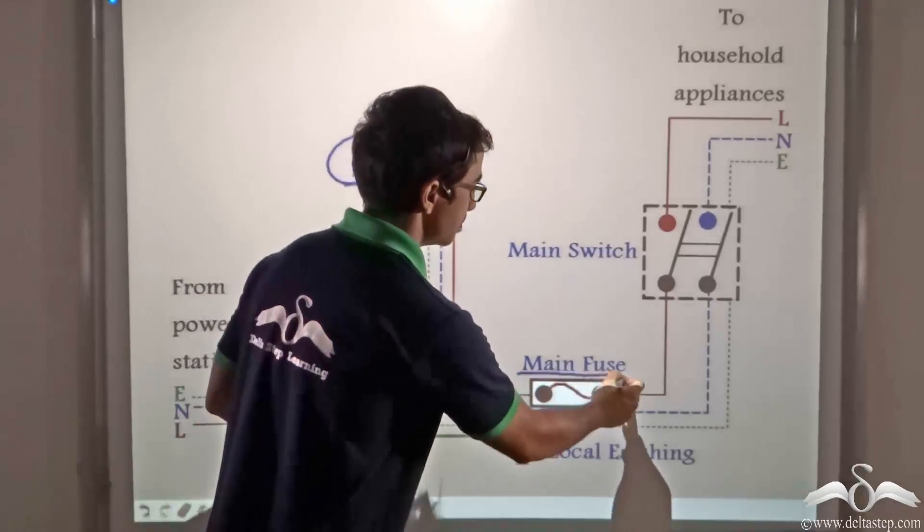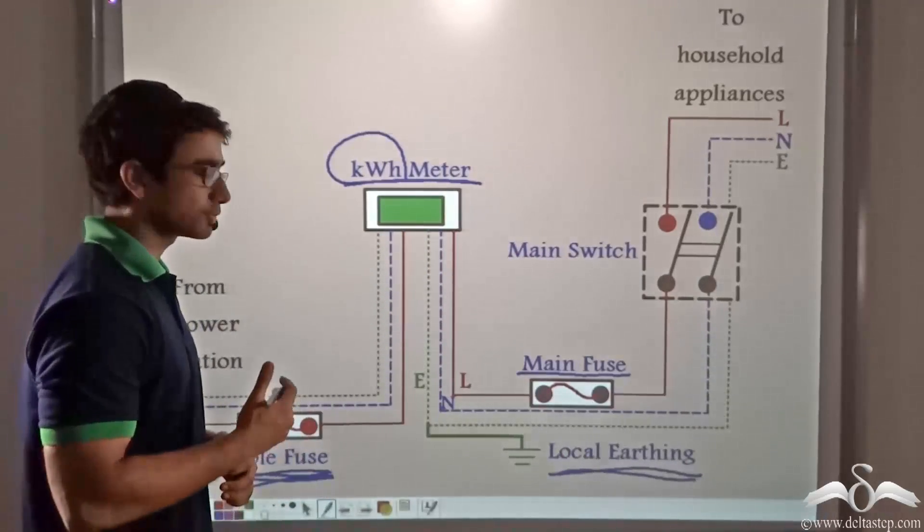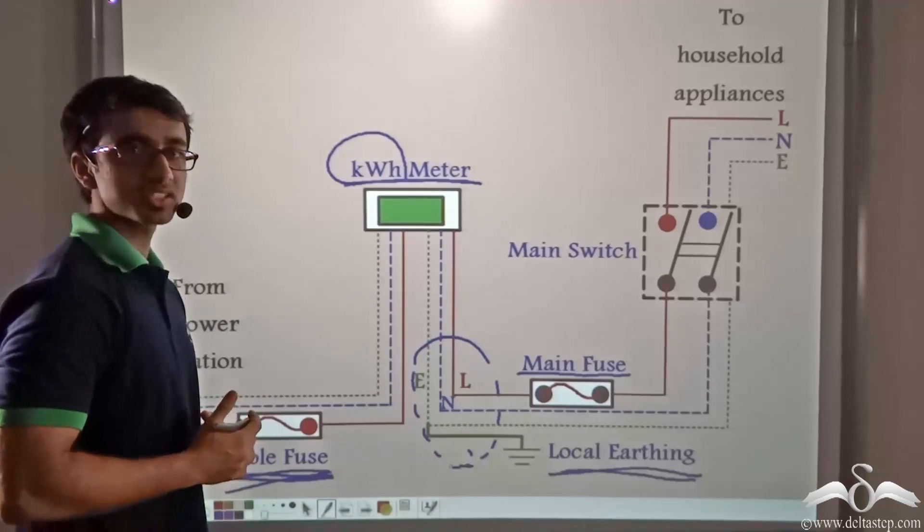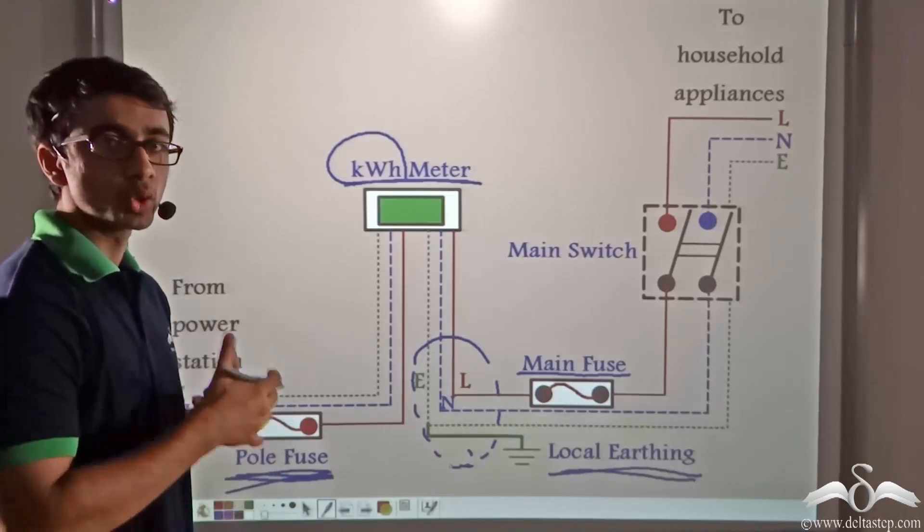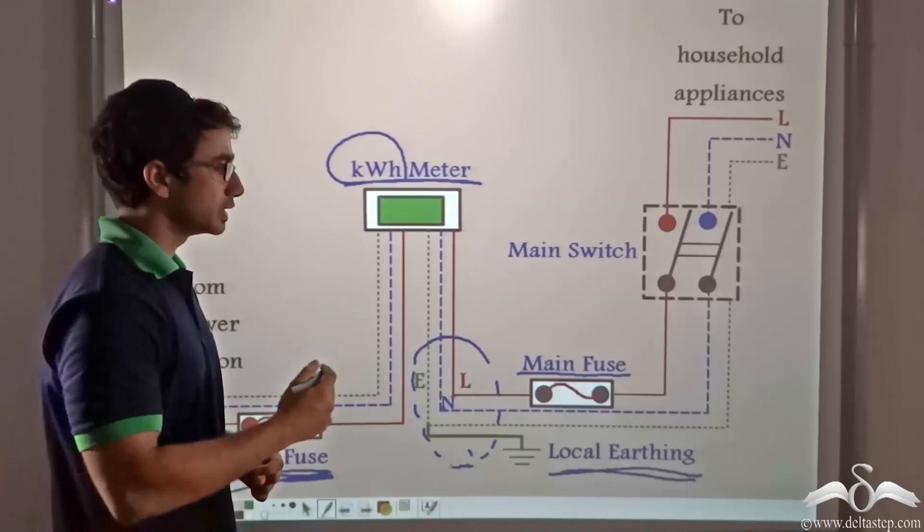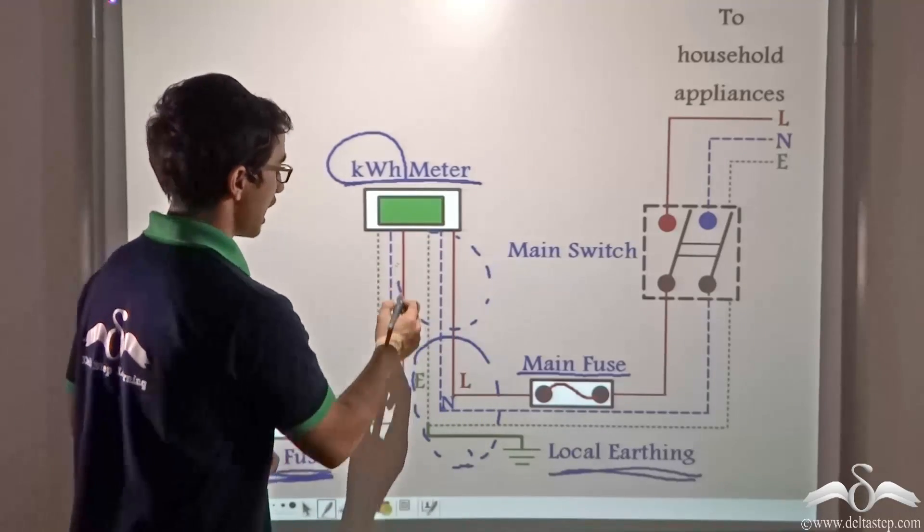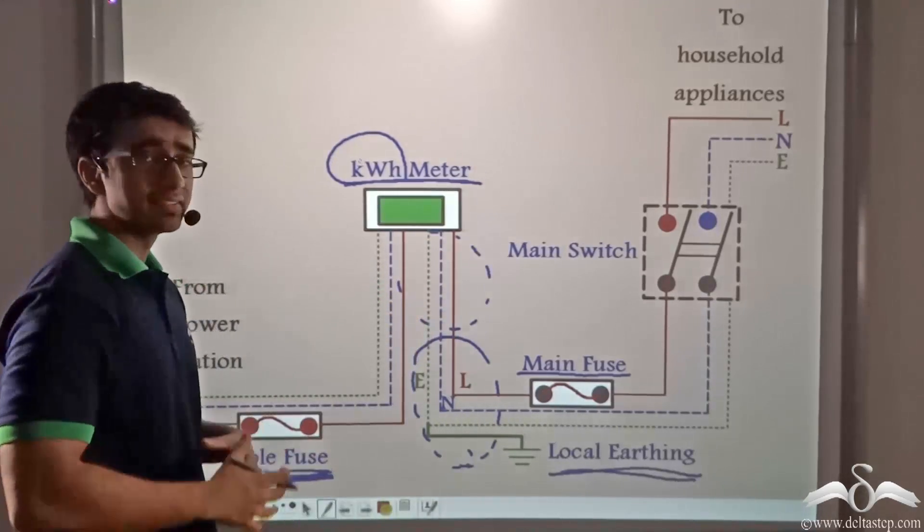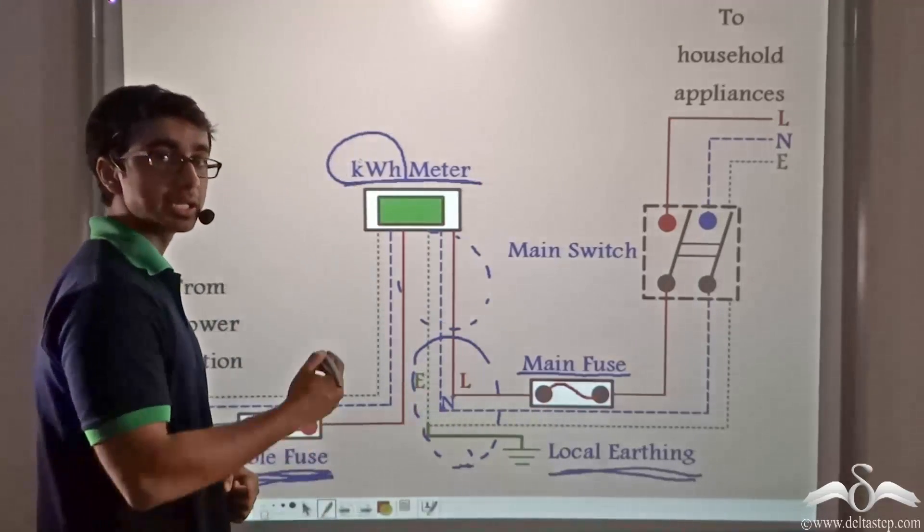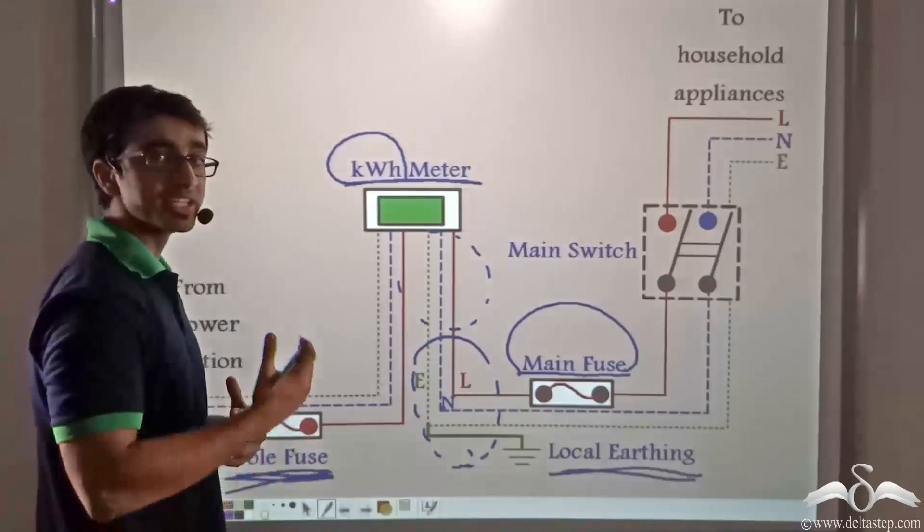Moving on further, we have what is called a main fuse and a local earthing. So let us say that there has been some sort of fault in this region. The local earthing ensures that the excess charges flow down to earth. And the main fuse is a second step of security which ensures that if there is any fault that is occurring in the region after the pole fuse, then the excessive current will not reach the appliances in the home because the main fuse will break and prevent the current from reaching the appliances.